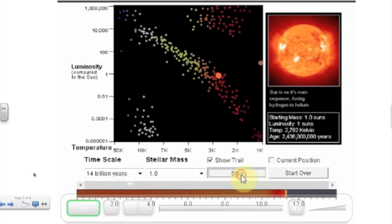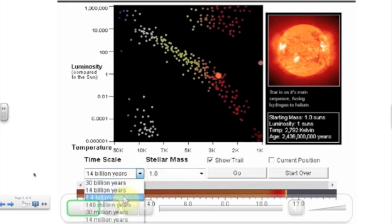With this simulation I can change the mass of a star and this is in comparison to our Sun so a stellar mass of one would be just like our Sun. We can also change the timescale. Let's get started.